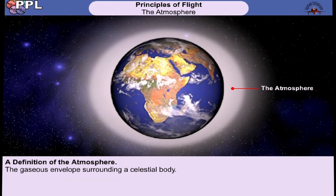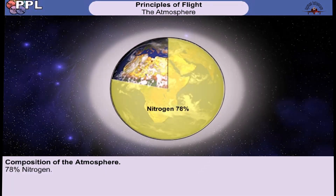An atmosphere is defined as being the gaseous envelope surrounding a celestial body. In more simple words, our atmosphere is a collection of gases that is held around the earth by gravity. There are well over 20 of these gases, some more abundant than others. We'll concentrate on the four most abundant gases.